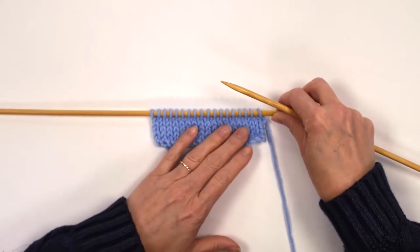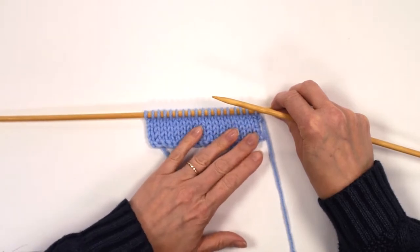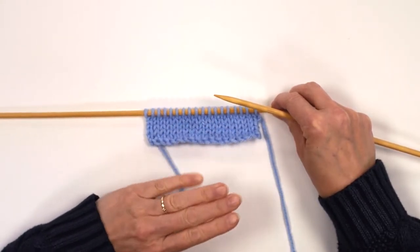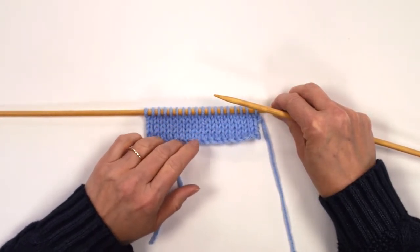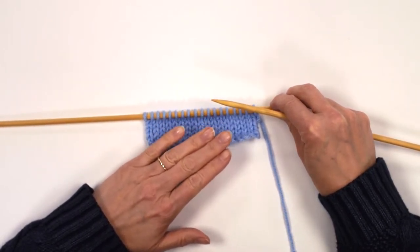Now the slight difference on this—I've just done a small piece of fabric here just so we've got something to work it against. The difference with this is that the purl side is the right side.